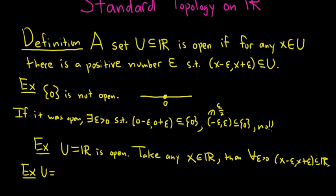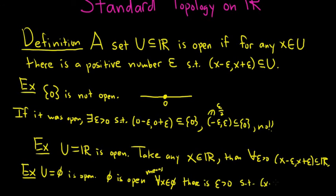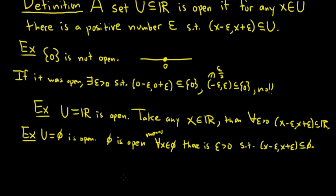If we take U to be the empty set, that's also open. This will be vacuously true. Recall that the empty set is open. What does it mean? It means that for all x in the empty set, there is some epsilon greater than zero, such that x minus epsilon, x plus epsilon is contained in the empty set. But the empty set has no elements, right? It's the empty set. So this condition must hold for every element in our set. It's a vacuous truth, so it's open.